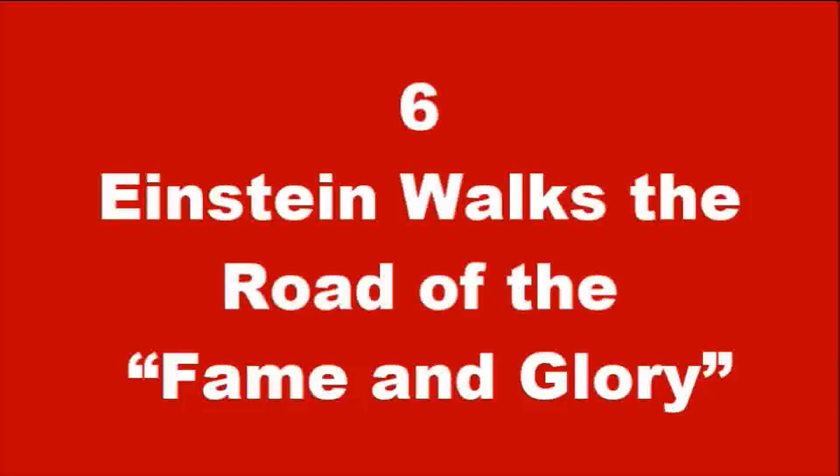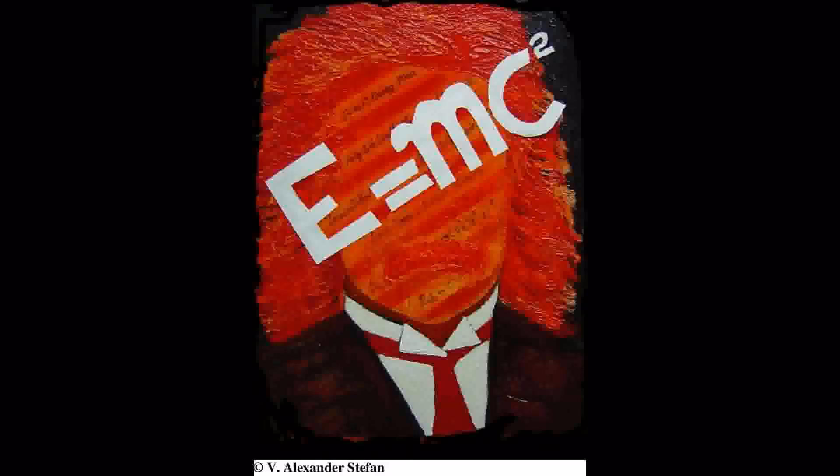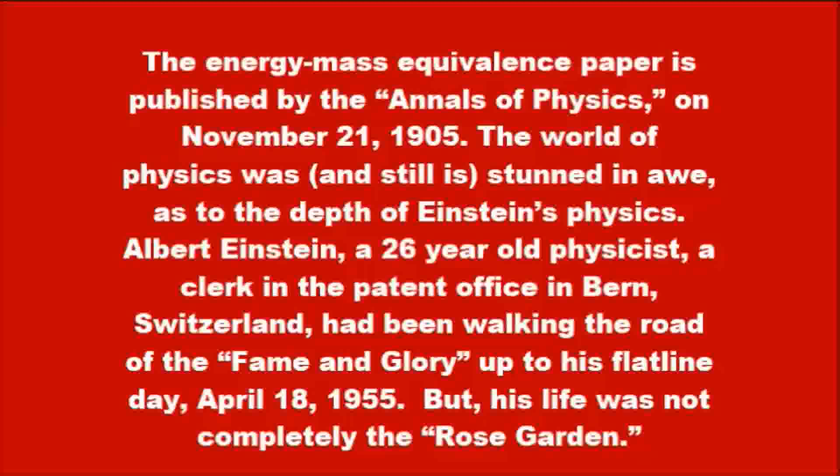Einstein walks the road of fame and glory. The energy-mass equivalence paper is published by the Annals of Physics on November 21, 1905. The world of physics was, and still is, stunned in awe at the depth of Einstein's physics. Albert Einstein, a 26-year-old physicist, a clerk in the patent office in Bern, Switzerland, had been walking the road of fame and glory up to his flatline day, April 18, 1955.